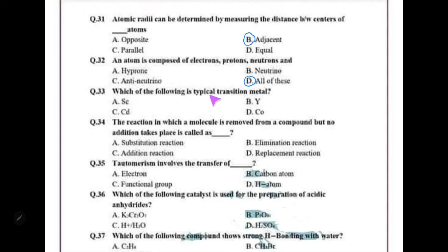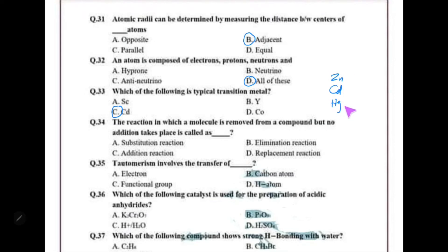Which of the following is a typical transition metal? Cadmium — remember that zinc, cadmium, and mercury are members of the same group and they are not typical transition metals. Wait — they are NOT typical transition metals; this should be reconsidered.